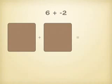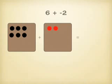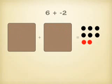So 6 plus negative 2. Let's bring in 6 positives: 1, 2, 3, 4, 5, and 6. And I'm going to add in 2 negatives. When I merge them together, the positives and negatives pair up — this positive and negative cancel, and that positive and negative cancel. So I'm left with 4 positives.